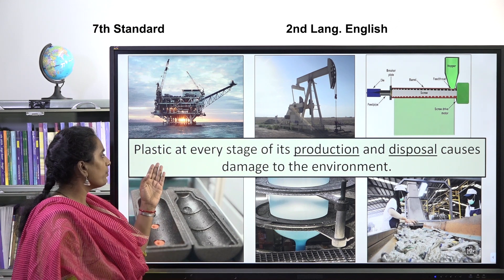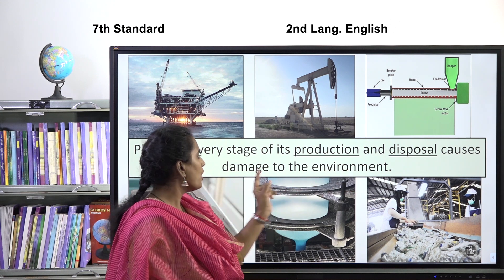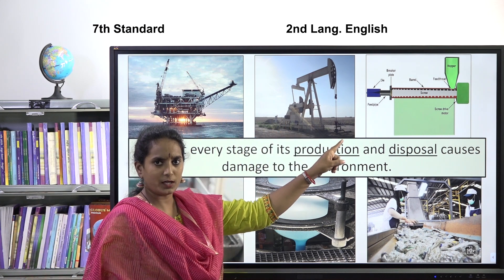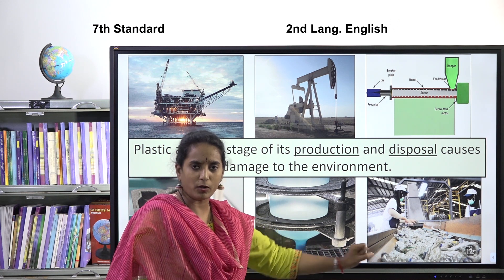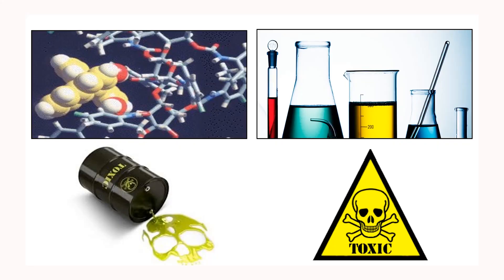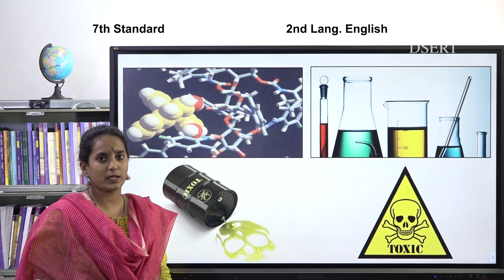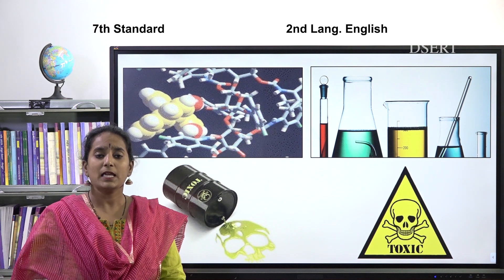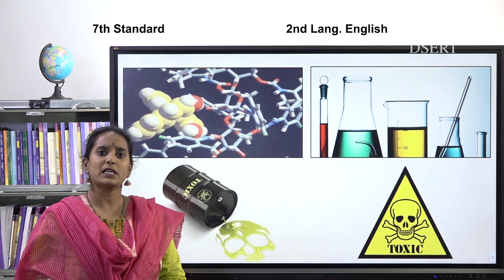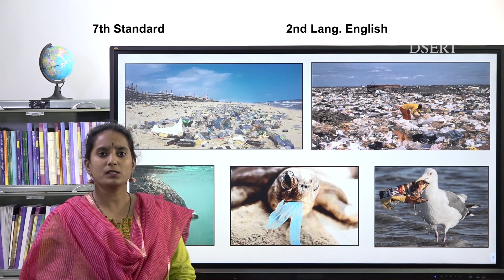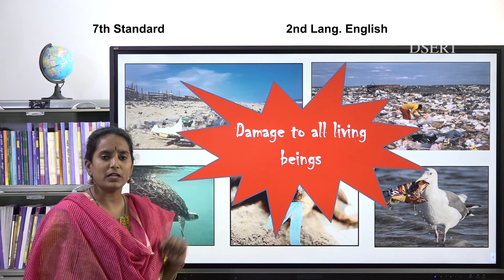Plastic at every stage of its production and disposal causes damage to the environment, leading to serious problems. The chemicals used in the manufacture of plastic are all toxic — toxic means poisonous. When we use plastic, it will affect our health. Plastic has affected our food chain too. The plastic that we use and throw here and there is causing a lot of damage to all living beings.